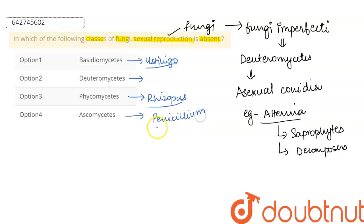This also undergoes sexual reproduction. Whereas if you come to ascomycetes, the example is Penicillium. This also undergoes sexual reproduction. So which is the exception? The exception is option two, which is deuteromycetes.